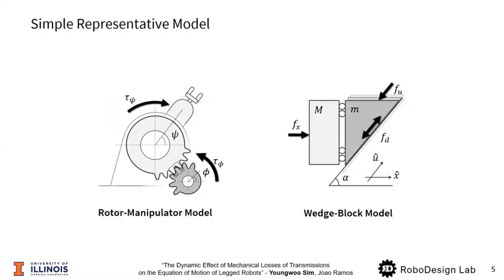These models share a core property of transmission, which is the direction of energy flow. Forward driving is to push the wedge with force F_u and consequently moving the rectangular block. This is equivalent to commanding a motor torque to drive the link of a manipulator.